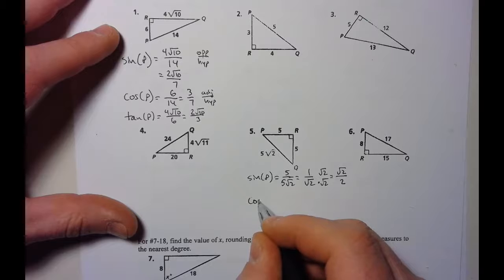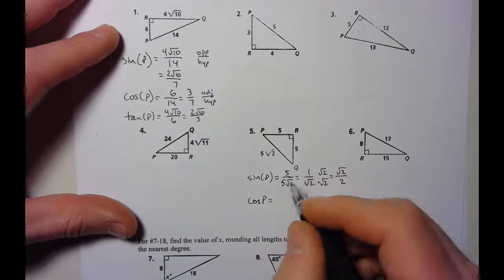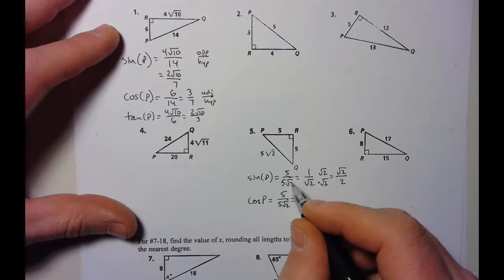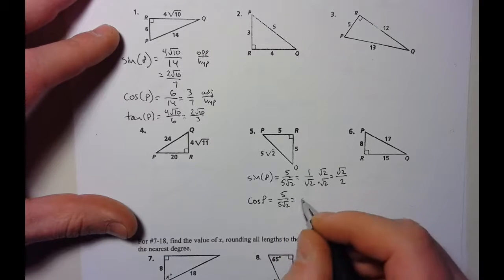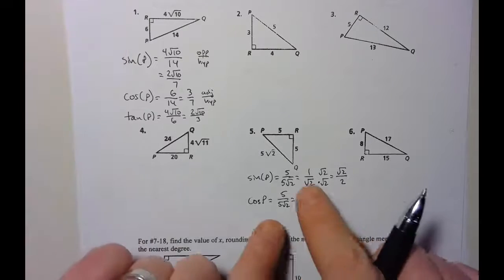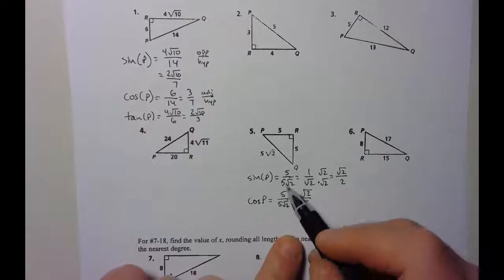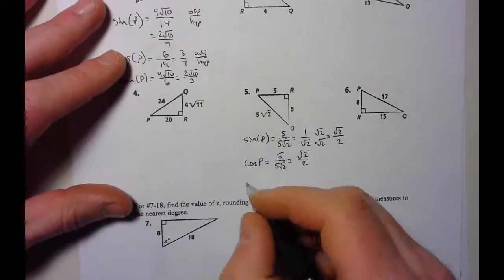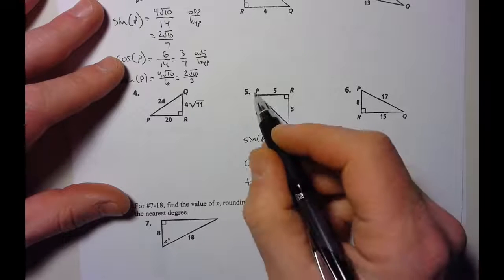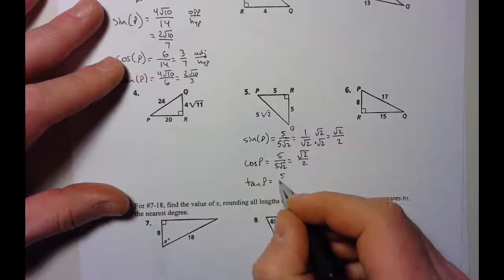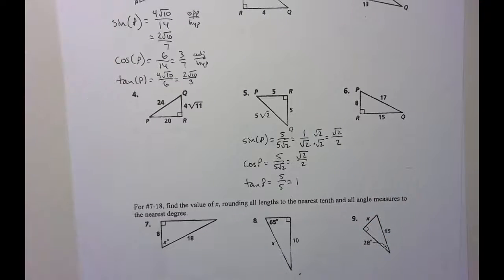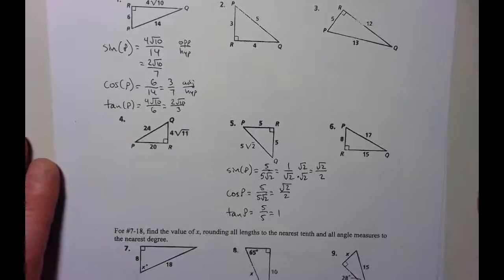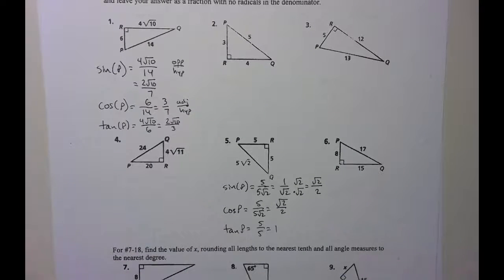For cosine of p, cosine is adjacent over hypotenuse — and look, I'm going to get the same thing, so I won't redo all that work. For tangent of p, opposite over adjacent is 5 over 5, which reduces down to 1. These ones are nice — no Pythagorean theorem needed here. This is the only one in the set where you have to rationalize, which is why I chose to do it.